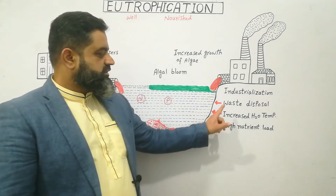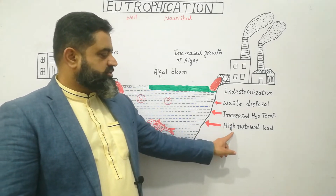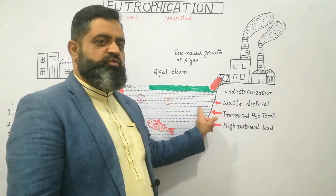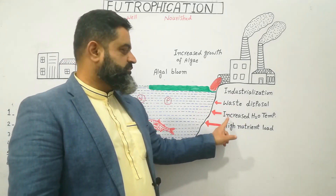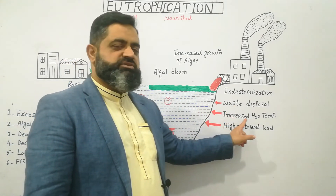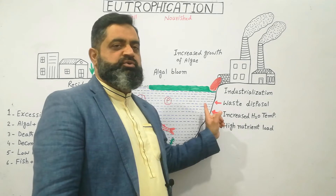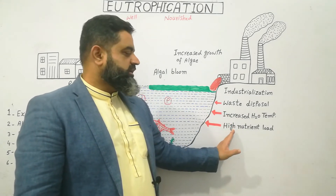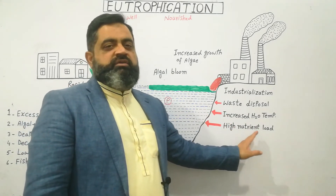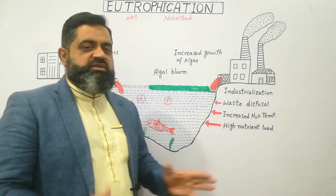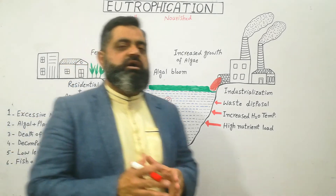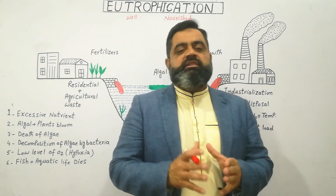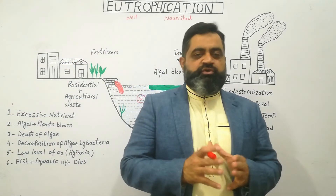So there are three possible contributing factors: number one, waste disposal going into water bodies; number two, increased water temperature due to global warming; and number three, high nutrient load. When these three factors combine, they cause eutrophication.